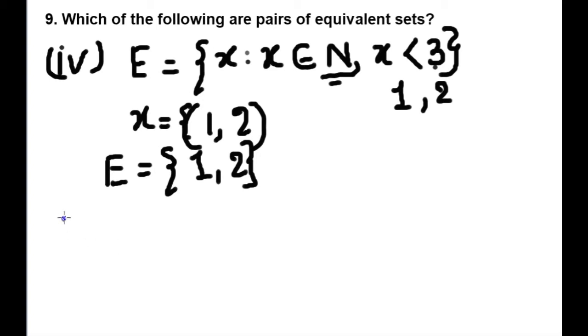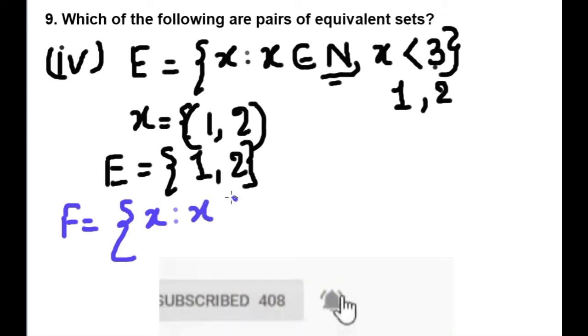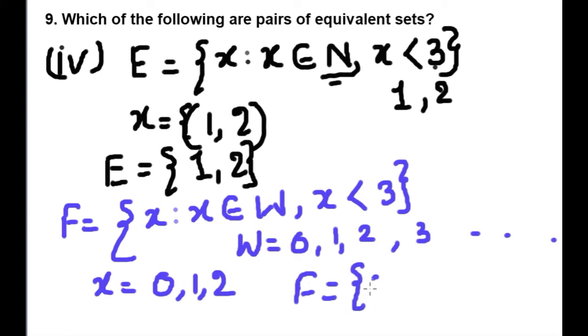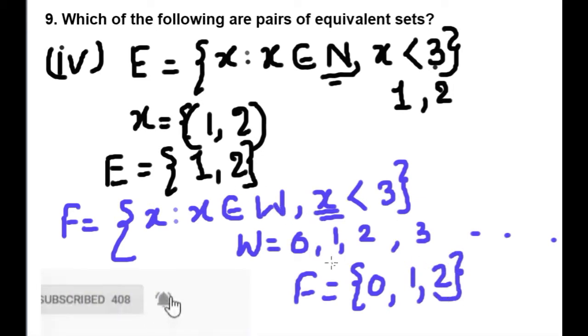Now the second set is F. F = set of x such that x is element of W. W means whole numbers where x < 3. Whole number starts from 0, 1, 2, 3 and so on. So here x will be 0, 1, and 2. So F = {0, 1, 2}. Less than 3 so up to 2 only. Whole numbers start from 0.